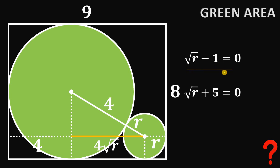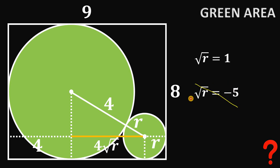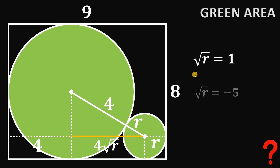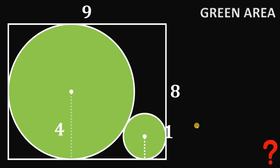Solving: √R = 1, or √R = −5. Since R is a positive real number, √R cannot be negative, so √R = −5 is not accepted. Therefore √R = 1, and squaring both sides gives R = 1. The radius of the small circle is equal to 1 unit.